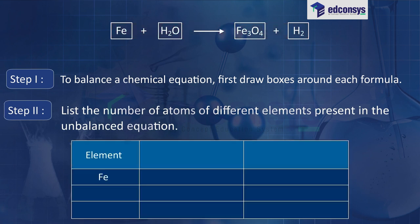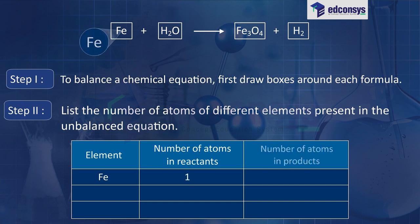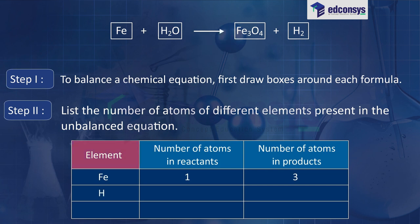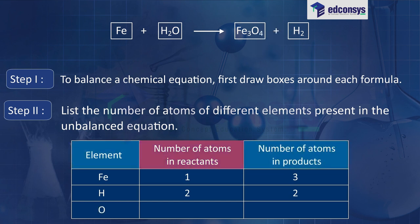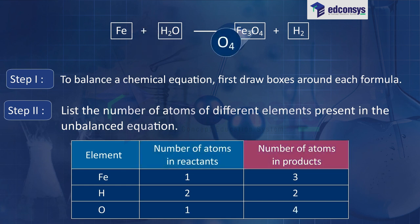Element Fe: number of atoms in reactants = 1, number of atoms in products = 3. Element H: number of atoms in reactants = 2, number of atoms in products = 2. Element O: number of atoms in reactants = 1, number of atoms in products = 4.